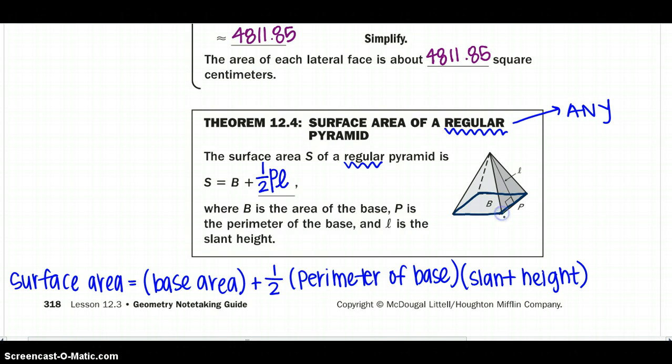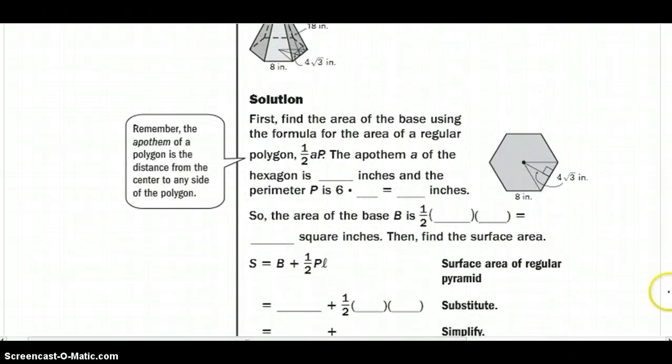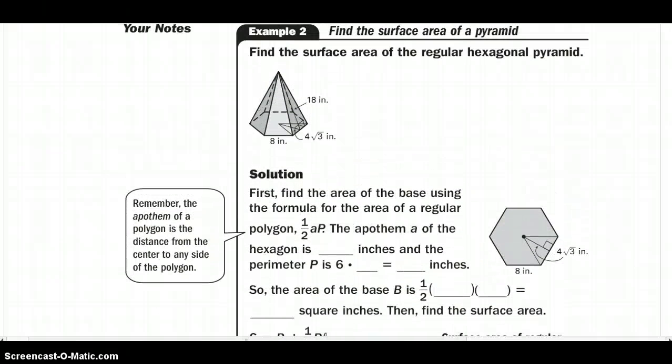I'm going to find the surface area of our slant height. So let's go ahead and use that in one of our examples too. Find the surface area of a regular hexagonal pyramid.